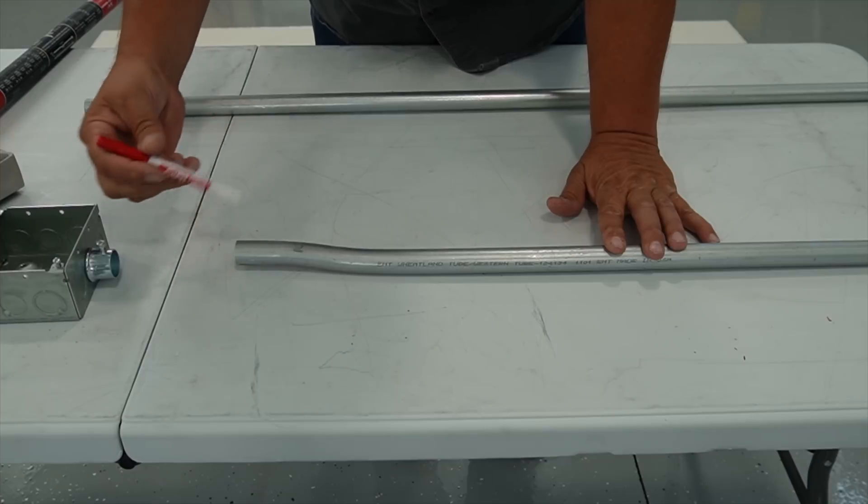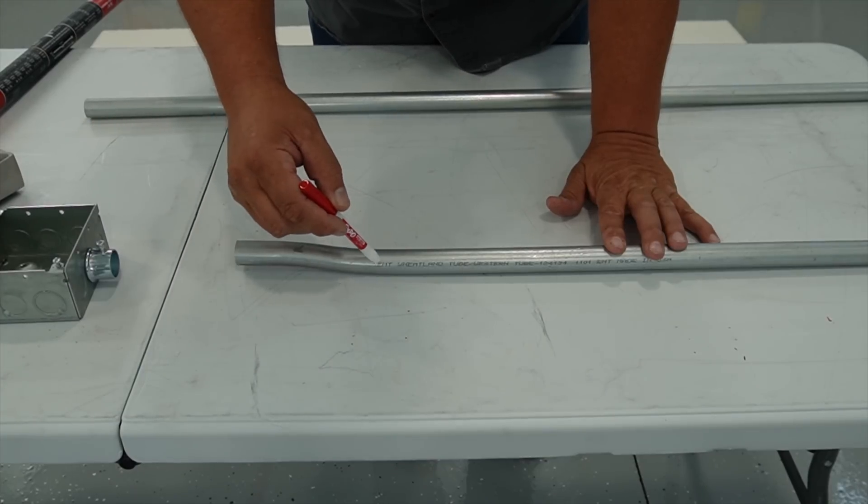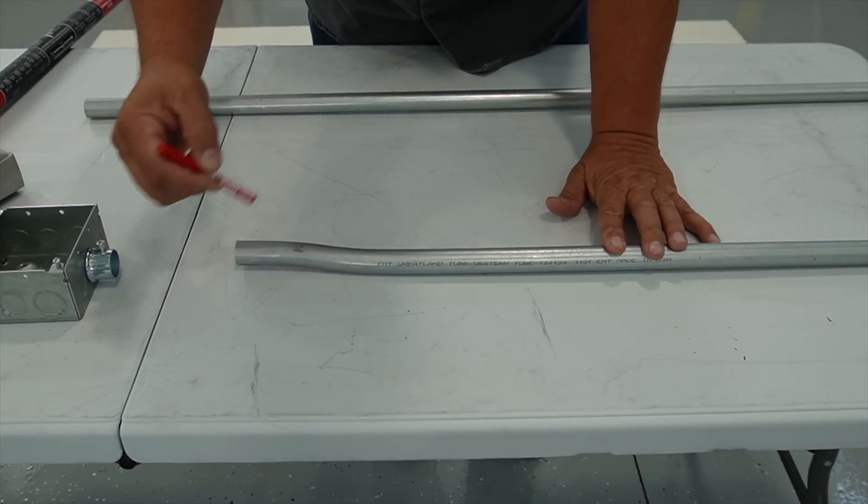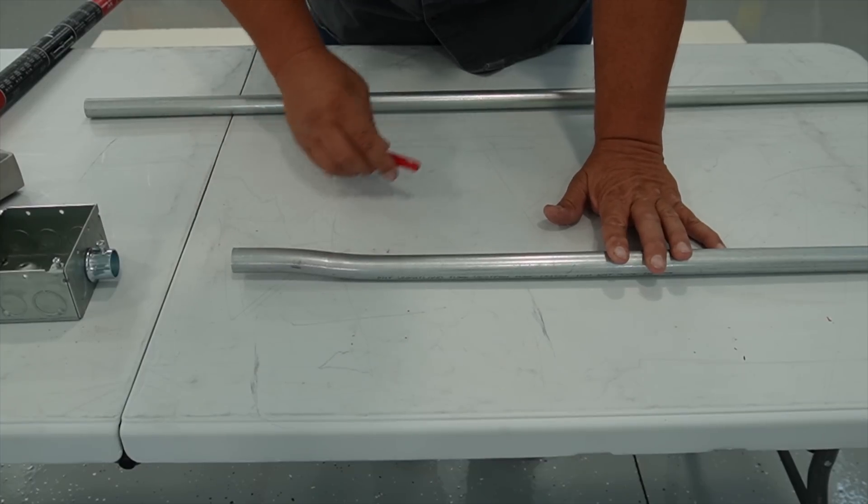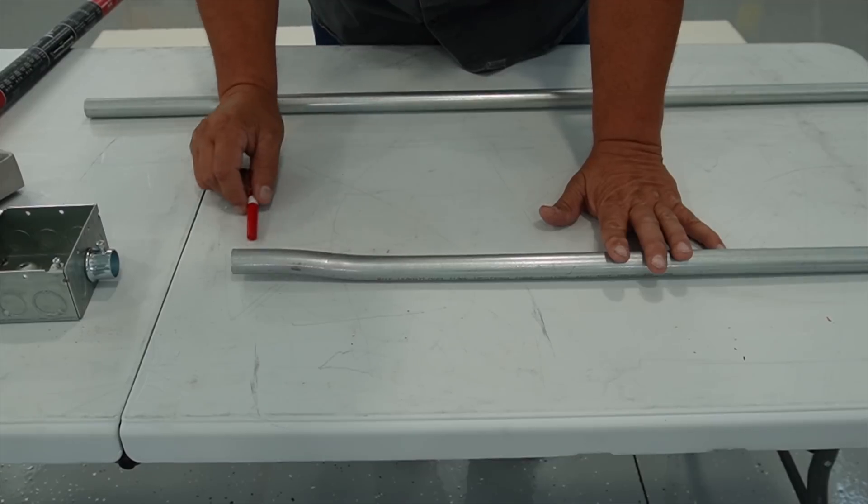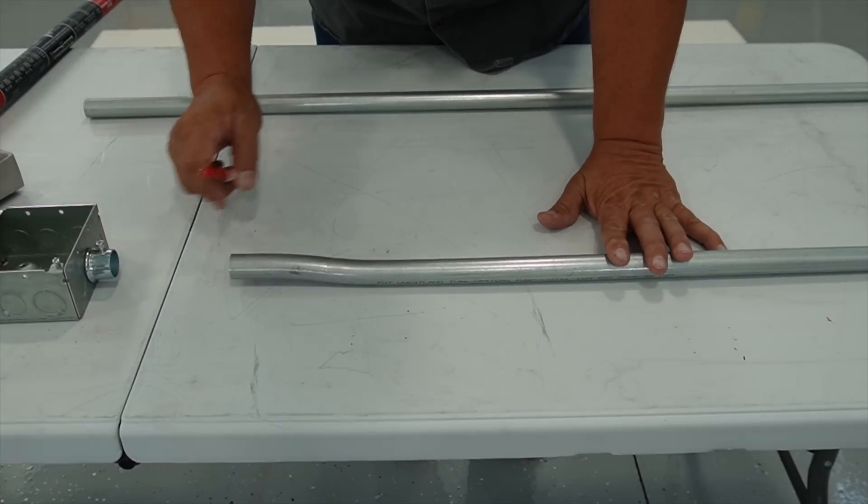So the box offset is really two ten degree bends opposing each other that are distanced at the appropriate distance between the two bends to create this offset.